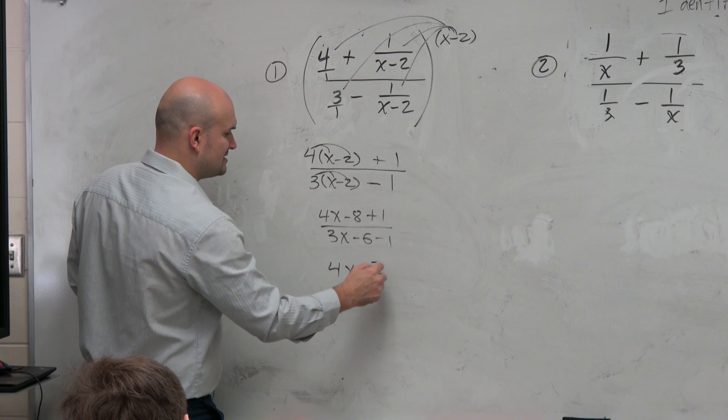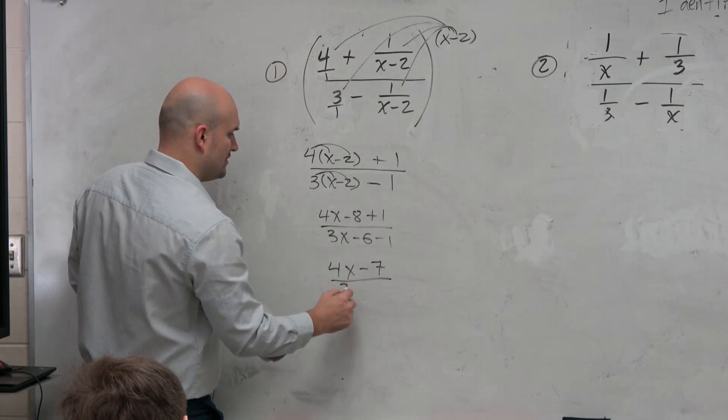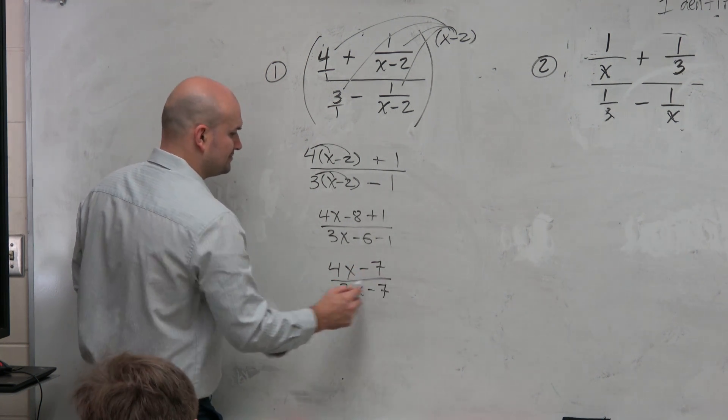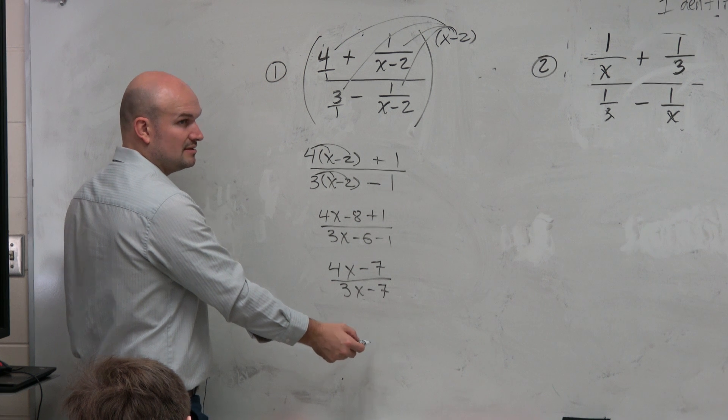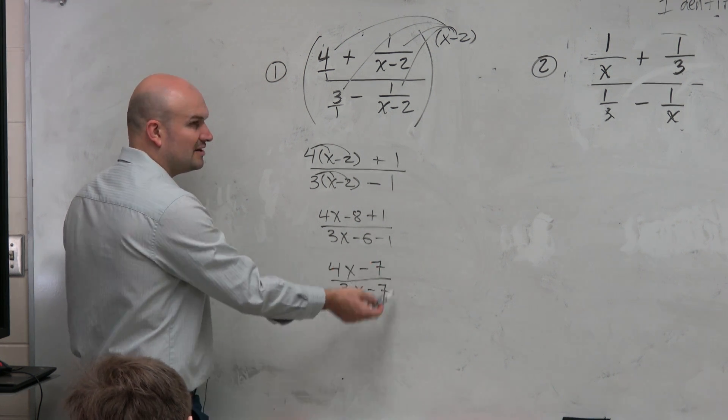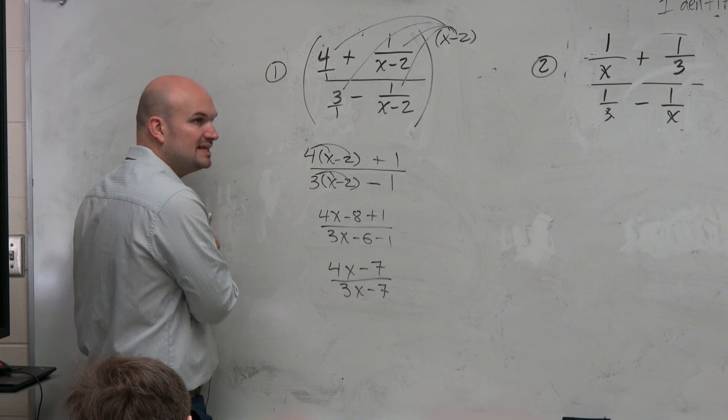4x minus 7 over 3x minus 7. Can I divide out the negative 7s? No. Guys, you can only divide out terms when they're separated by multiplication.